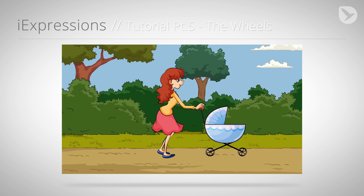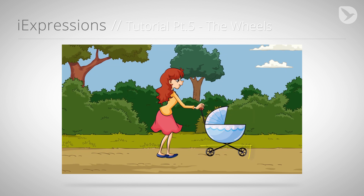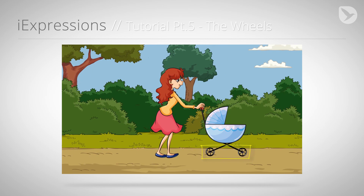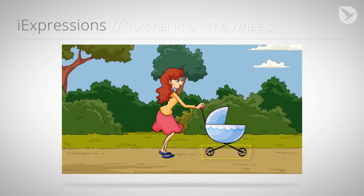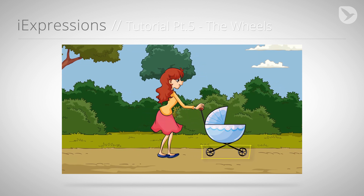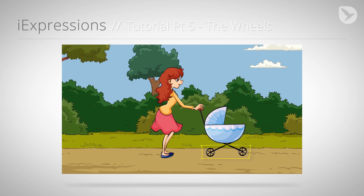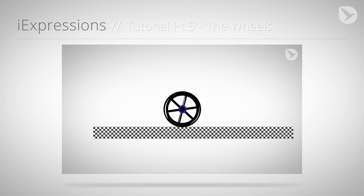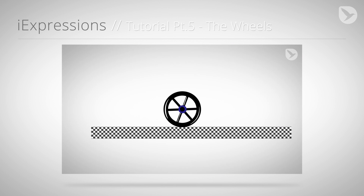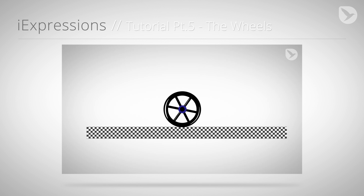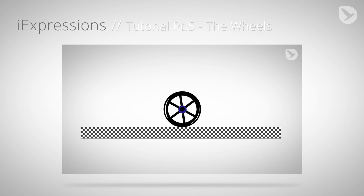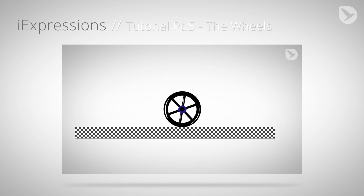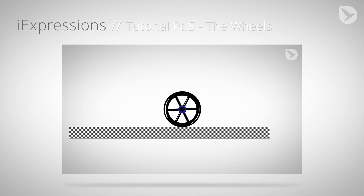In the fifth part we take care of the wheels of our baby buggy. We do not just ensure that the wheels rotate when the buggy moves, but we also make sure that the reflections on the spokes appear and disappear naturally.